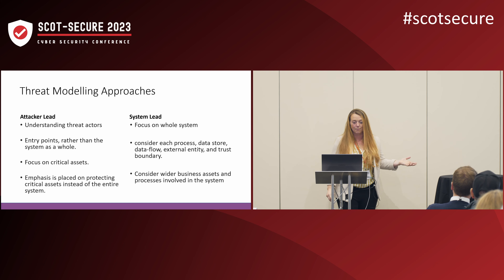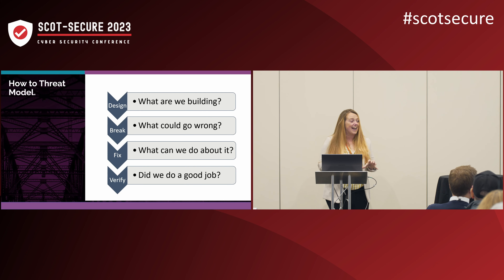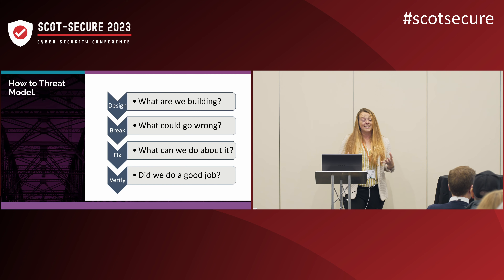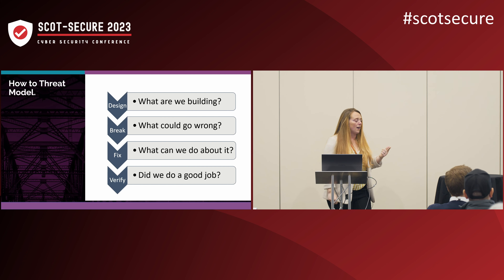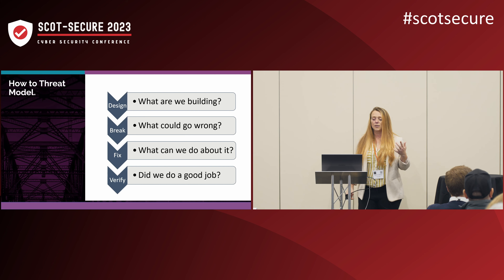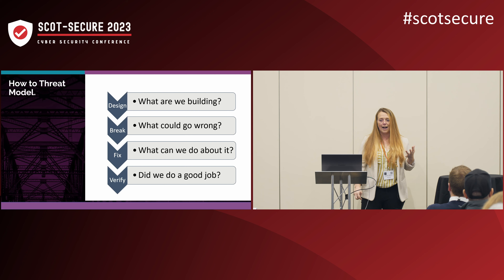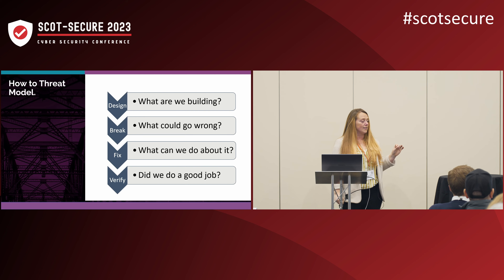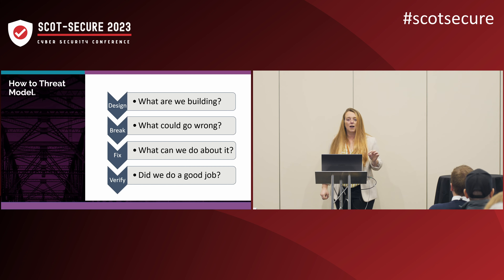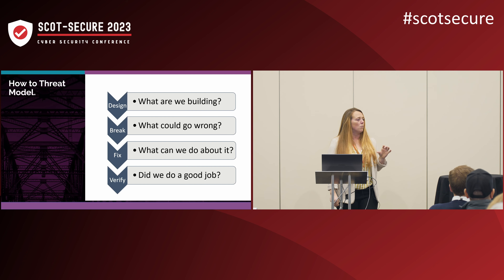At a high level, there are only four stages to threat modeling. In the design stage you're looking at what are we building, what does this process or application look like. The most important part — requiring intimate knowledge of the system — is: what could possibly go wrong, how could we break it, how could somebody else break it? Then you've got: what can we do about it, how do we fix it, how do we change our plan? And finally: did we do a good job of fixing what we thought could go wrong — which is where vulnerability scanning, penetration testing, and auditing come in.